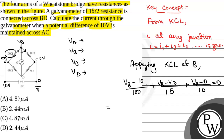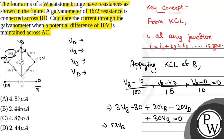Simplifying the KCL equation at B: multiplying through by the LCM gives 3(Vb − 10) + 20(Vb − Vd) + 30Vb = 0, which simplifies to 53Vb − 20Vd = 30. We call this Equation 1.